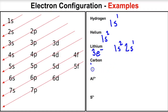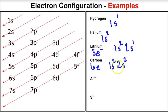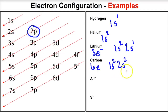Carbon has six electrons. The first two fill the 1s orbital; the next two fill the 2s orbital (s's hold a maximum of two). That leaves two electrons, which go in the 2p orbital — the next to be filled after 2s. The p's can hold a maximum of six, so you fill a sub-level completely before moving on to higher energy levels. Carbon's configuration is 1s2, 2s2, 2p2.